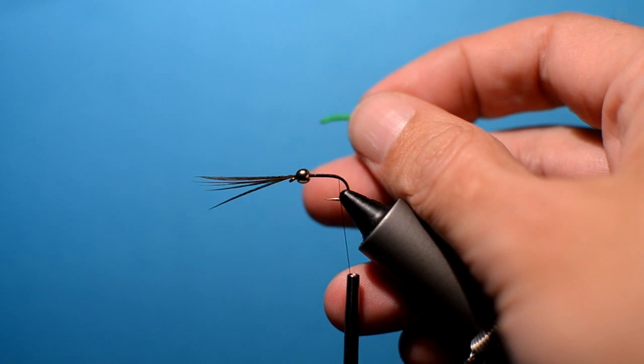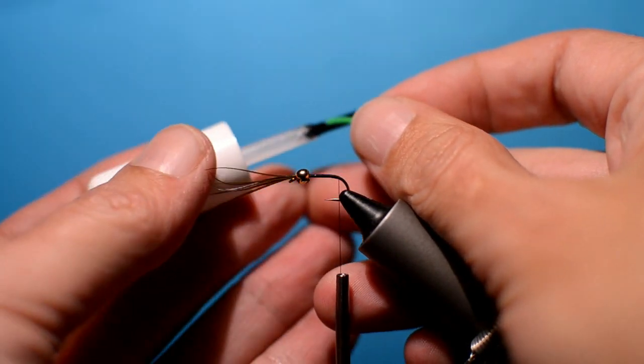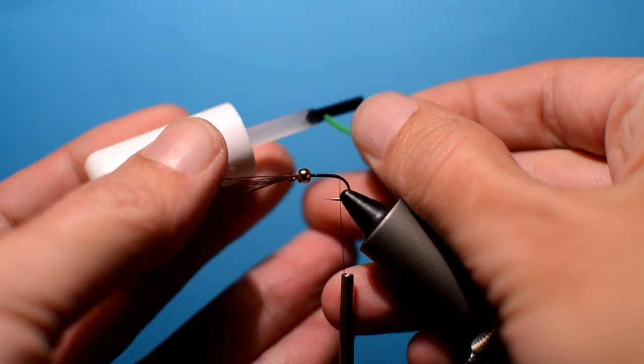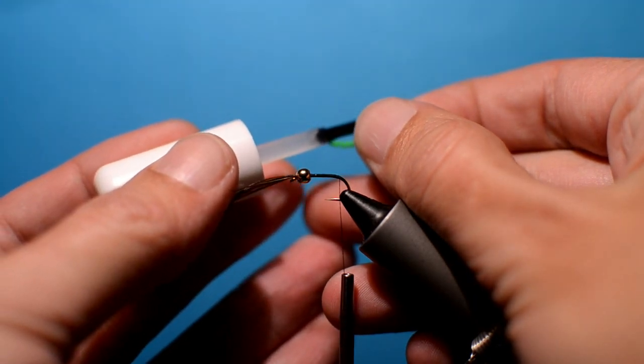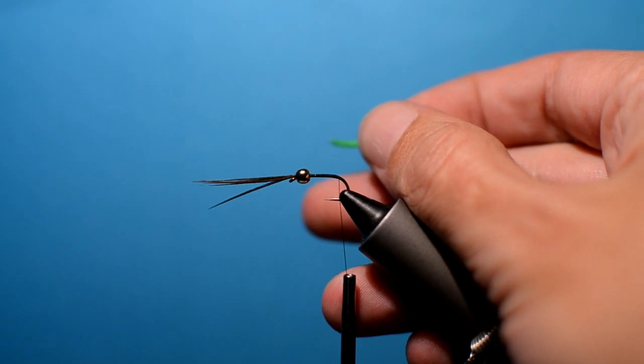Now, a little added touch on the end of these. Just get a little bit of UV resin. Just wipe it onto the end. Doesn't need to be much. Help stop it fraying.